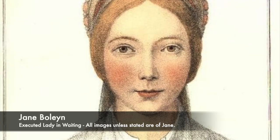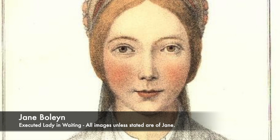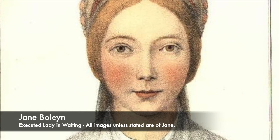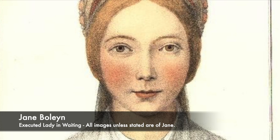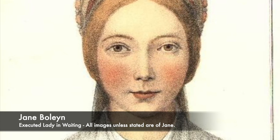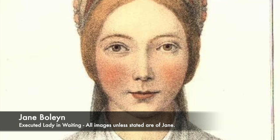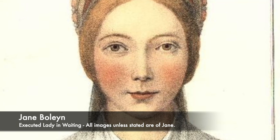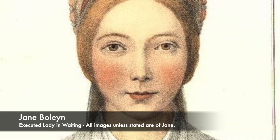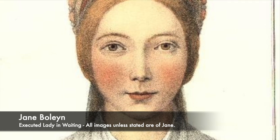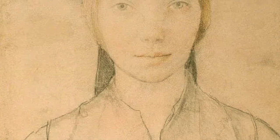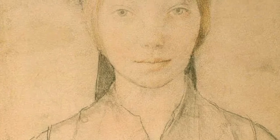Jane Boleyn was born Jane Parker, and was the daughter of Henry Parker the 10th Baron Morley. Through her great grandmother, Jane was a distant relative of King Henry VIII, and the King was her half second cousin. She was born around 1505 in Norfolk, and her family were wealthy and were powerful members of the English upper class. Her father was a man who wanted Jane to become involved in the royal courts, and at 14 she joined the household of King Henry VIII's first wife, Catherine of Aragon.